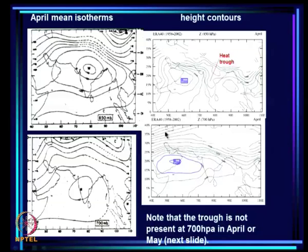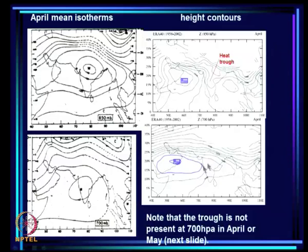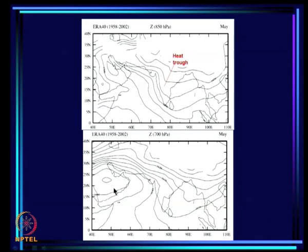Looking at the April mean isotherms at different geopotential heights: at 850 mb there is still a trough over the warm region — this is the heat trough. But at 700 mb there is no trough at all, which is the signature of the heat trough — it does not extend beyond 2 to 3 kilometres. For May also, you see a heat trough over land at the surface, but at 700 mb there is no trough in that region at all. So a heat trough is very well developed in April and May.